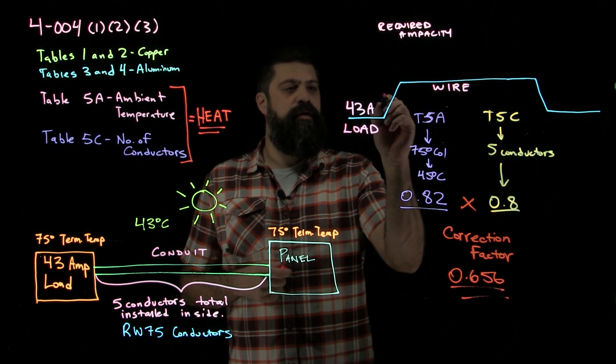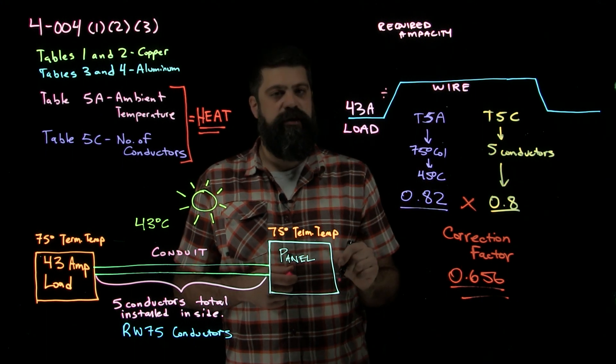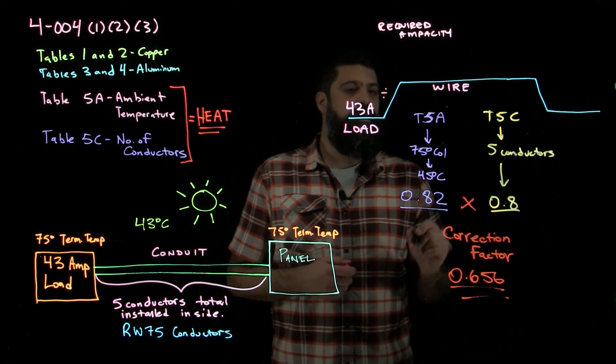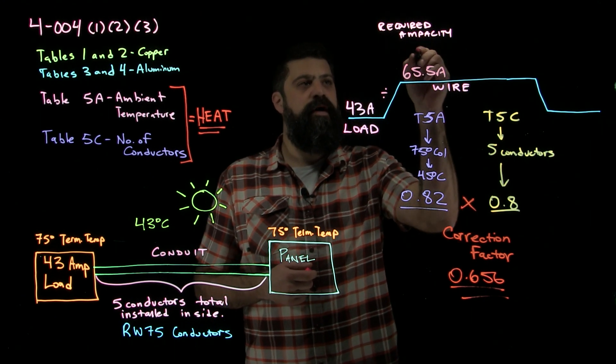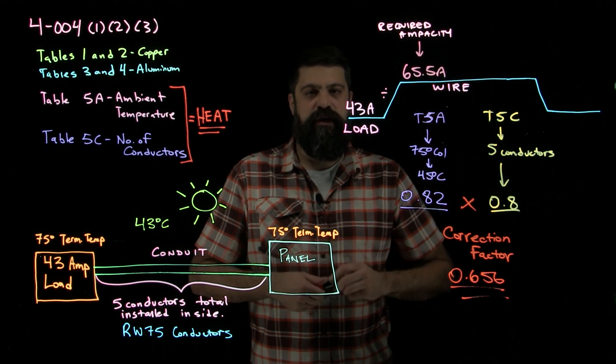So in order to figure out what size wire I need, I would divide by this correction factor of 0.656. When I do that, I get a number of 65.5 amps. That's the required ampacity for this particular load.